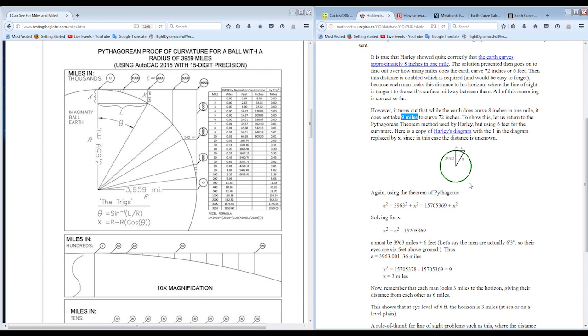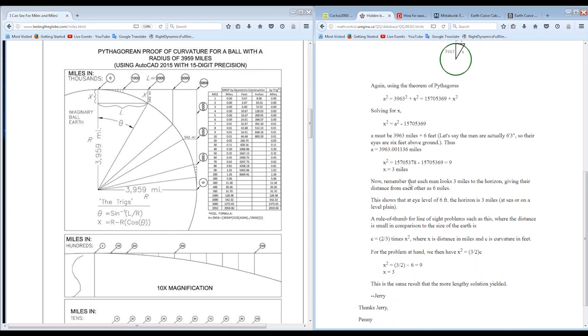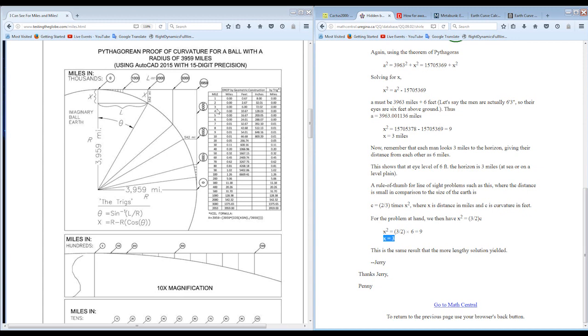You can't just multiply 8 times the miles. And when they go through all the Pythagorean theorem, you end up with 3 miles as your answer. So at 3 miles now, and we'll go back to our chart here.